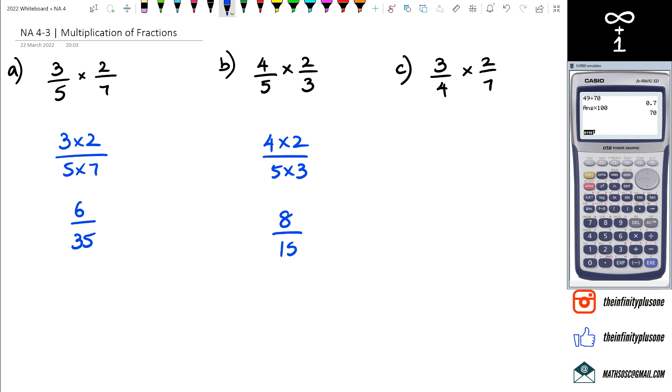Now question c, we've got the same thing: three times two divided by four times seven. So three times two is six, four times seven is 28. Now at this point what you can do is actually simplify this further, and we can start with the easiest one. We've got two even numbers, so we're going to divide both the numerator by two and the denominator by two.